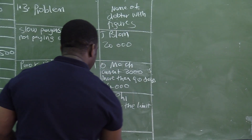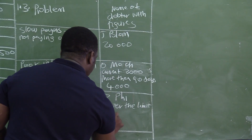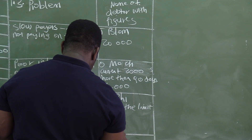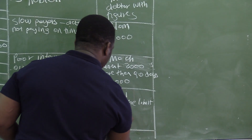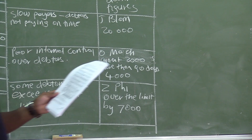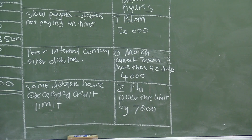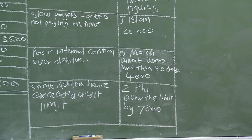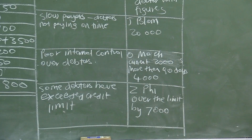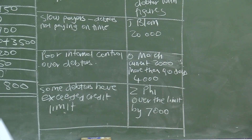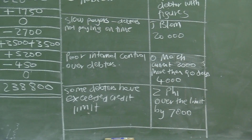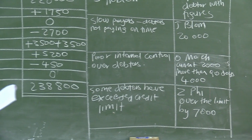ZPhi is over the credit limit by R7,000. The credit limit is R22,000 but the balance owing is R29,000. These are the three problems identified when looking at this age analysis.